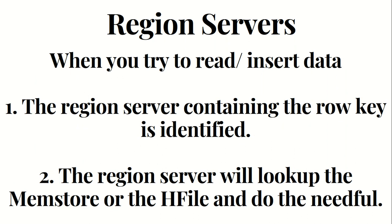To summarize: when you try to read or insert data, the region server containing the row key is identified first, and then the region server will look up the mem store or HFile and do the needful. If you are looking for data for a particular row key, you will find it either in the mem store or in an HFile, not both.